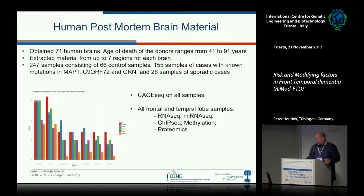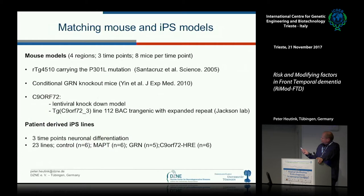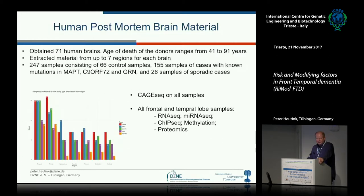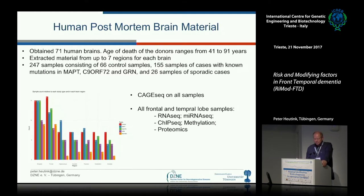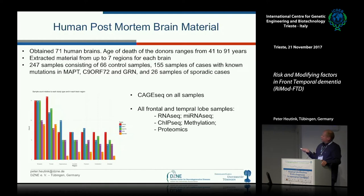For the human post-mortem brain data, we collected 71 human brains with mutations in C9ORF72, tau, or granulin, and collected material from seven regions of each brain for DNA and RNA analysis. We had ample material for frontal and temporal lobe, but RNA quality from some other brain regions was insufficient. All these brains are characterized by RNA sequencing, epigenetics, and proteomics, giving a relatively complete dataset from each individual brain.